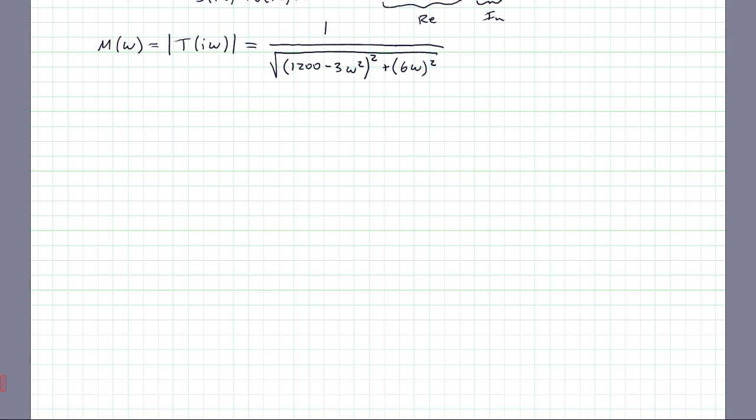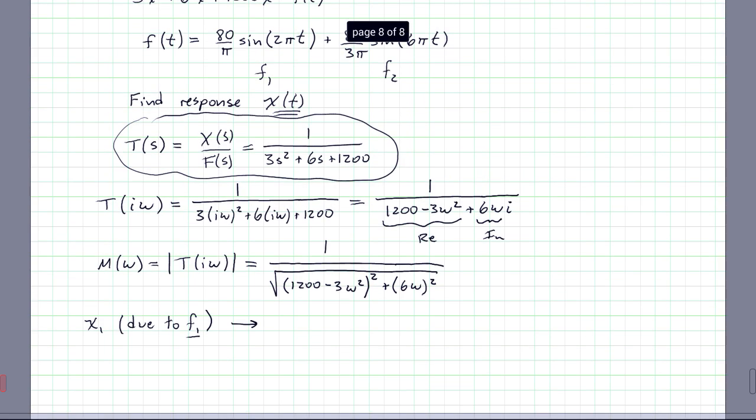And so now we're going to apply this magnitude ratio to each forcing input term so that we can figure out its effect on the output. So we'll isolate this into two parts. So the first thing is we're going to find x1, which is due to F1. So in the first forcing term, if you scroll back up, why don't we do that real quick. So the first forcing term has an amplitude of 80/π and a frequency of 2π, whereas the second one has this amplitude and this frequency. So for the first forcing term, let's just make it a note that ω1 is 2π radians per second. And the magnitude of that force is 80/π.